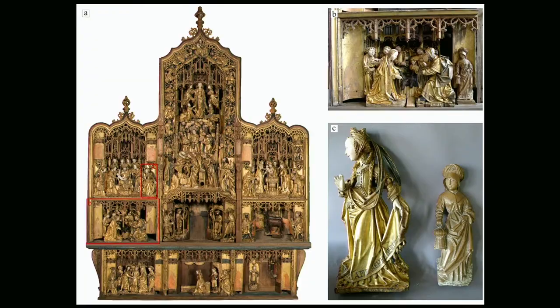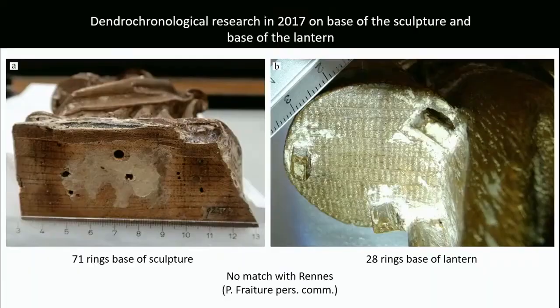I also did the dendro in a conventional way on the underside, having to clean because I couldn't see the rings very well. This is also one of those cases where the sculpture is wider higher up — at the level of the base of the lantern — and I could match patterns but still had a very short series of about 92 rings. I sent them to my colleague Pascal Fraiture in Belgium who had researched the sculptures from the Rennes altarpiece, and she said it didn't match at all — those ones are Belgian and Baltic oak, and this one is not.